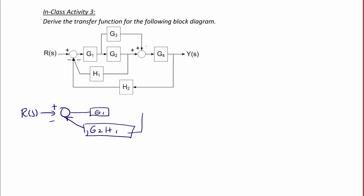So then notice right here, I have a summer that sums g2 and g3. So on the other side of this block, I can replace that with g2 plus g3. And then output of that is g4 and Y(s).